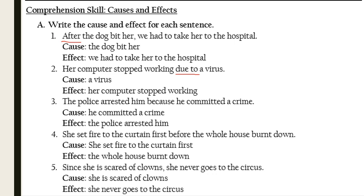Sentence three: 'The police arrested him because he committed a crime.' 'Because' is a linking word. What happened first — because of what? He committed a crime. 'He committed a crime' is the cause, and 'the police arrested him' is the effect.